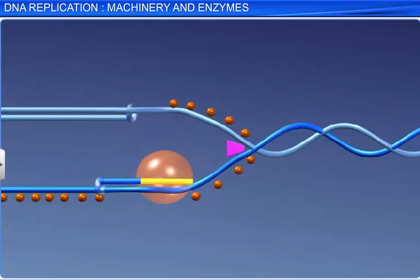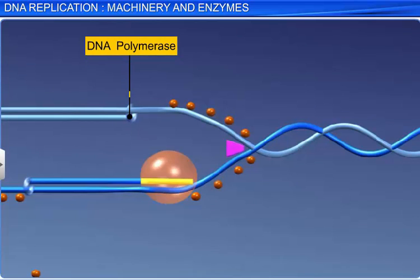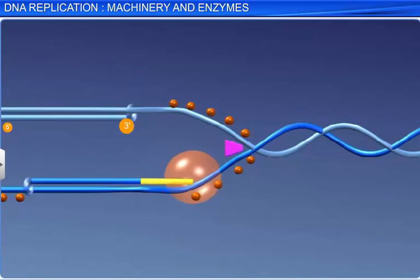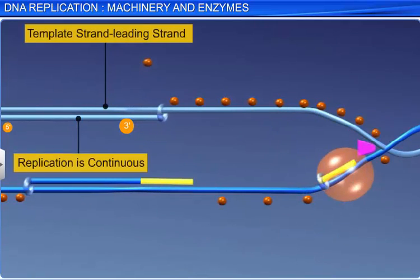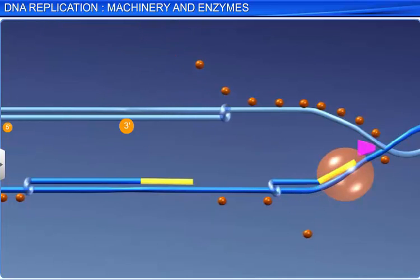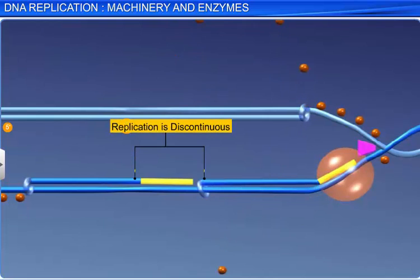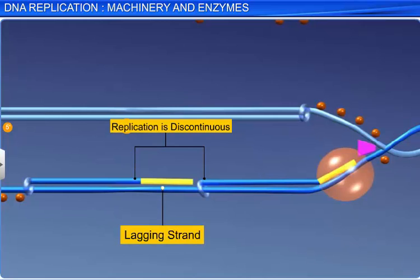However, there is a small catch. The DNA dependent DNA polymerase enzyme can catalyze the replication reaction in only one direction: 5' to 3'. This causes additional complications. Replication on one template strand that has 3' to 5' polarity, also known as the leading strand, is continuous. Whereas replication on the other template strand with 5' to 3' polarity, also referred to as the lagging strand, is discontinuous.